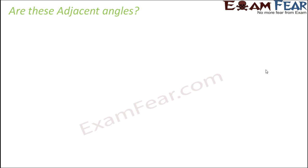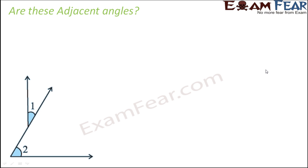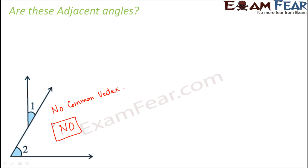Now let's look at some examples and determine whether the angles are adjacent or not. For the first one — are angle 1 and angle 2 adjacent? No, because they do not satisfy the first criteria: they do not have a common vertex. The vertex of angle 1 is here and the vertex of angle 2 is here, so they do not have a common vertex. Therefore these are not adjacent angles.